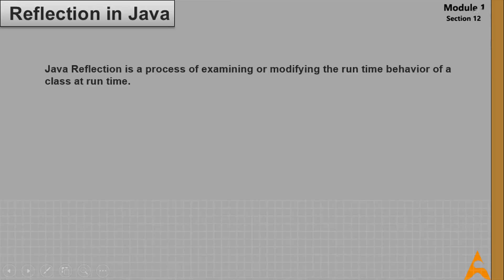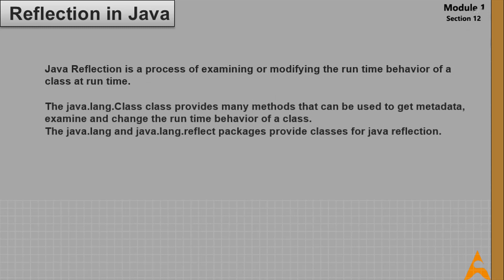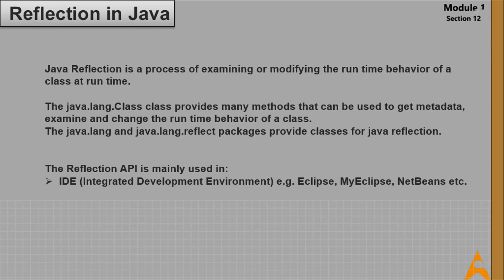Now let's discuss Java Reflection. Java Reflection is a process of examining or modifying the runtime behavior of a class at runtime. The java.lang.Class class provides many methods to get metadata, examine, and change the runtime behavior of a class. The java.lang and java.lang.reflect packages provide classes for Java reflection. The Reflection API is mainly used in IDEs such as Eclipse, MyEclipse, NetBeans, debuggers, and test tools.